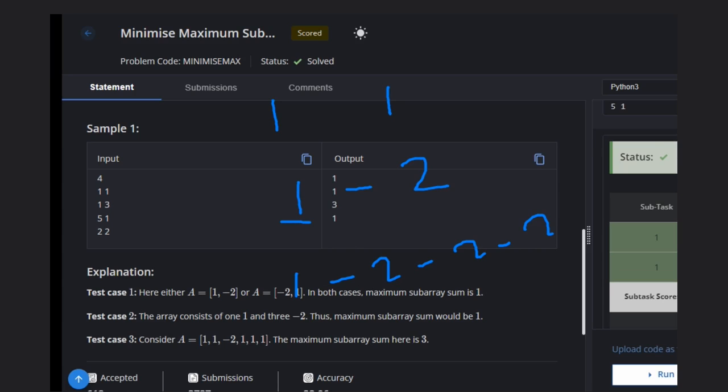So let's see an interesting thing, the third example. So 5 and 1. We have 5 ones, so we can put 1, 1, 1, 1, 1. So now what we need to do? We need to minimize it. What we can do? We can put this -2. We have to minimize this thing.